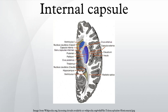The superior parts of both the anterior and posterior limbs and the genu of the internal capsule are supplied by the lenticulostriate arteries, which are branches of the M1 segment of the middle cerebral artery.